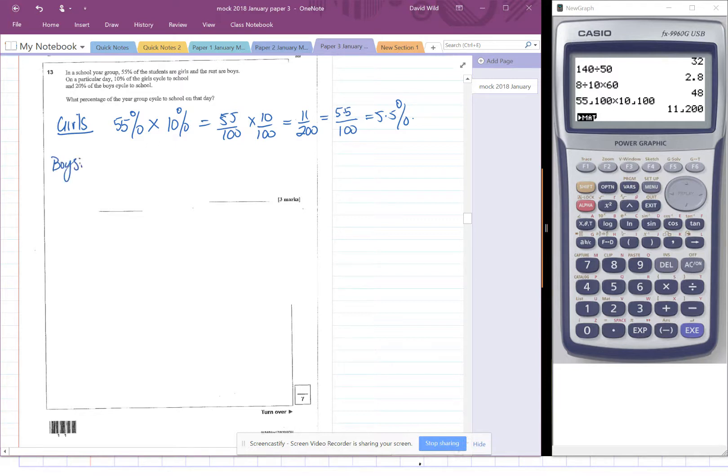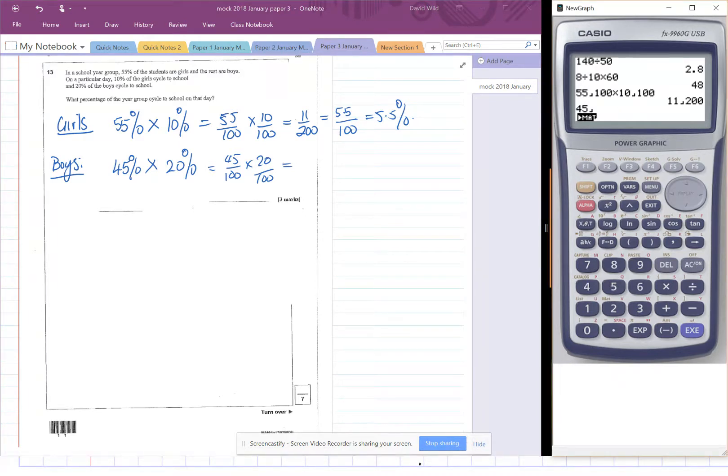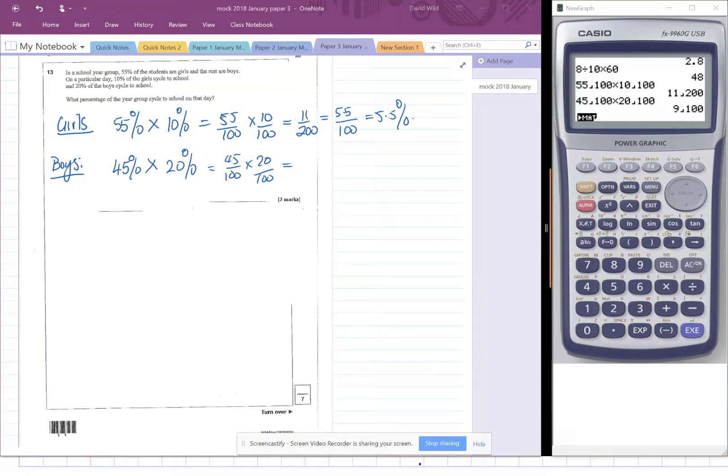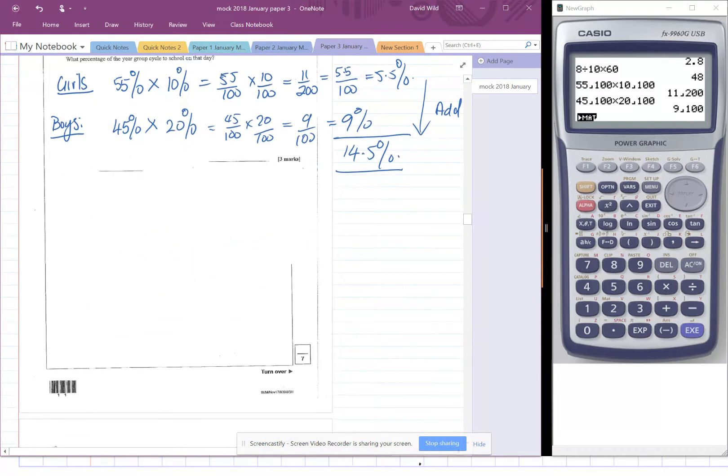Let's do the same thing for boys. So we've got 45% of the year group are boys and of those 20% cycle so that's 45% times 20%. 45 divided by 100 times 20 divided by 100 this is 9 over 100 which of course is 9%. So there is a total of 9 plus 5.5%, so 14.5% total. So we're going to add these together. The answer here is 14.5%.